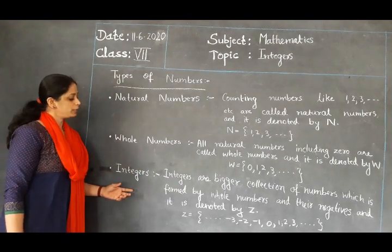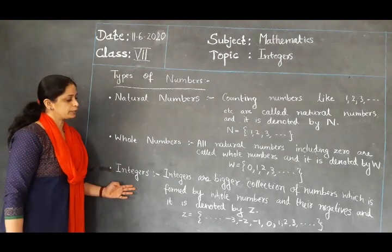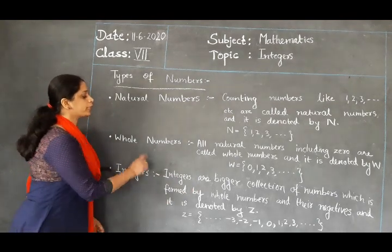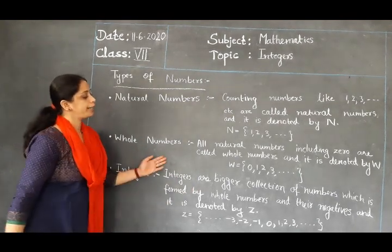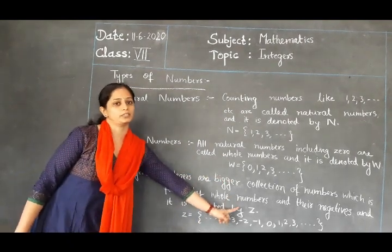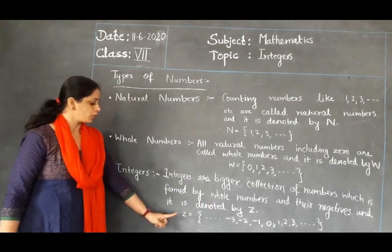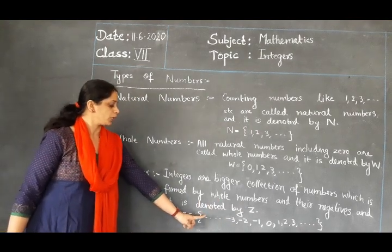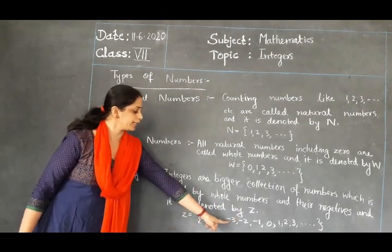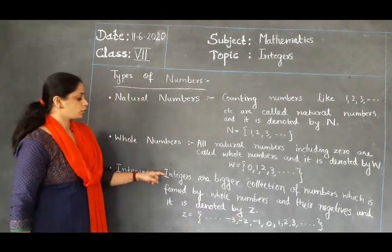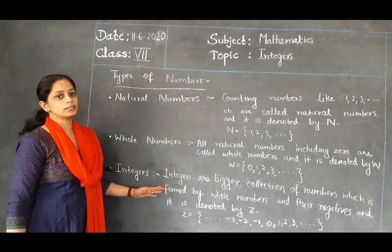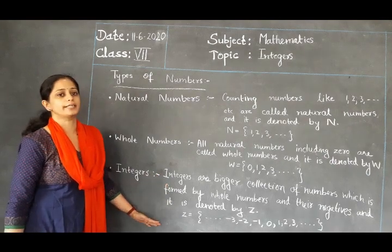This year we will be learning integers. Integers means a bigger collection of numbers, which is formed by whole numbers and their negatives. It is denoted by Z. Capital Z equals: minus 3, minus 2, 0, 1, 2, 3. The negative part is what is newly included in integers. In this lesson, you will be learning more about integers.